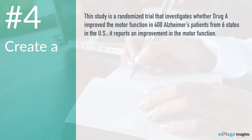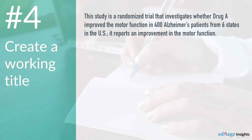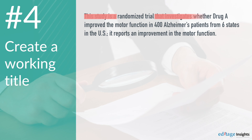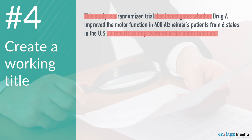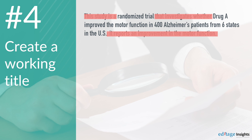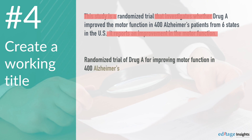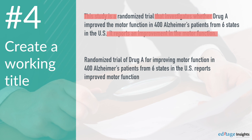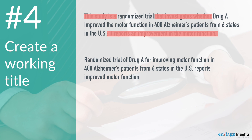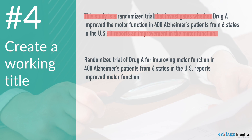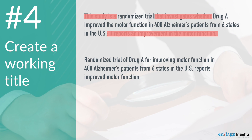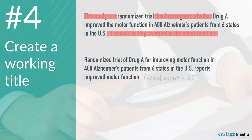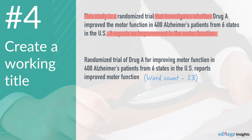Step 4. Create a working title. Delete all repetitive or unnecessary words from this sentence. Here's how. What you get from this example is: Randomized trial of Drug A for improving motor function in 400 Alzheimer's patients from 6 states in the U.S. reports improved motor function. Note the word count of this working title.